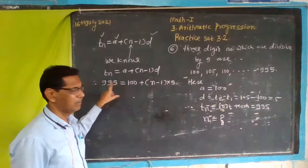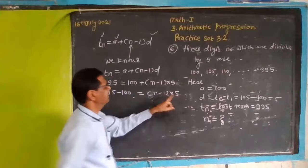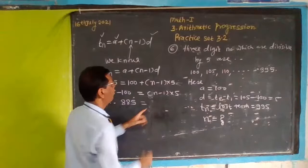Now we solve this equation. We subtract: 995 minus 100 equals (n-1) into 5. That gives us 895 equals (n-1) multiplied by 5.